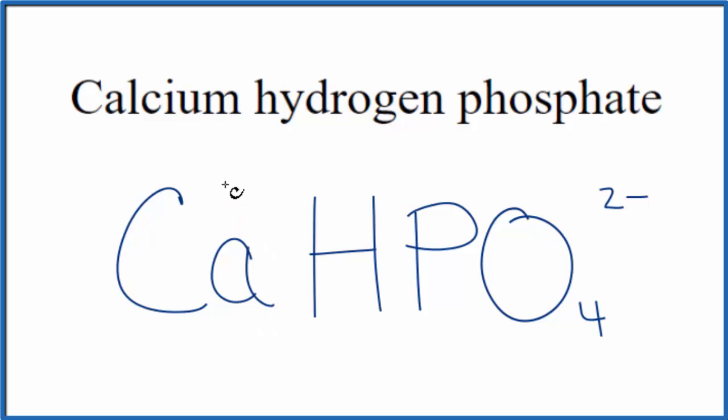On the periodic table, calcium is in group 2, so it has a 2-plus ionic charge. And we said this whole hydrogen phosphate ion, that's 2-.